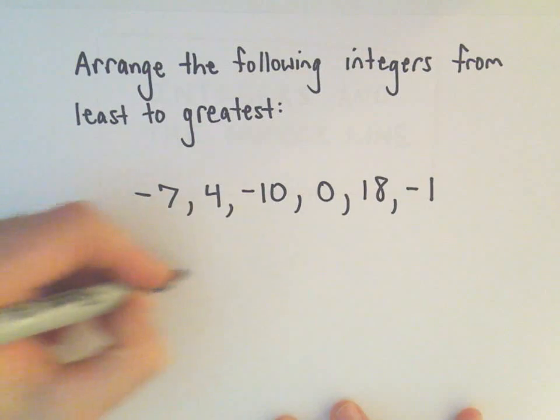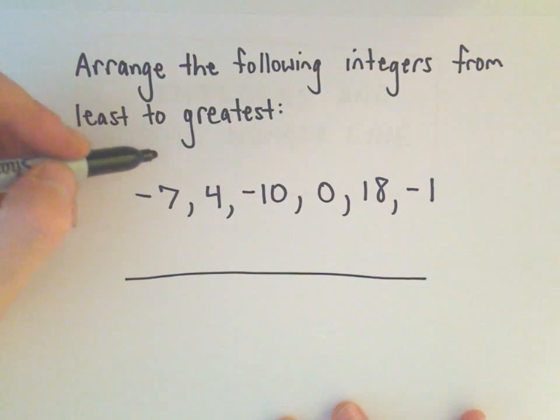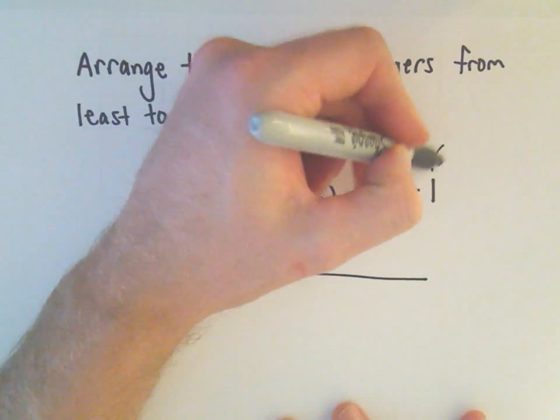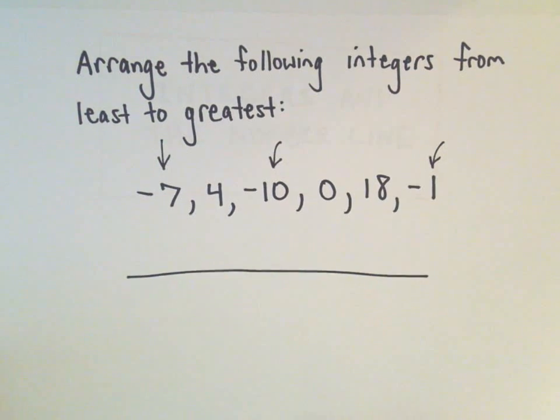And again, maybe it's easiest to think about a number line. So the first thing I do is pick out my negative values. I know those are going to be the smallest numbers.